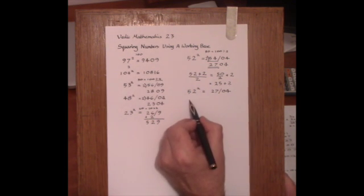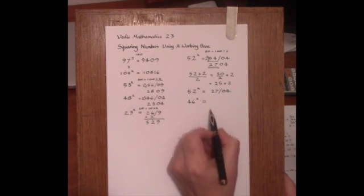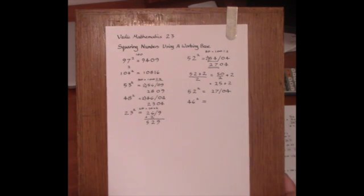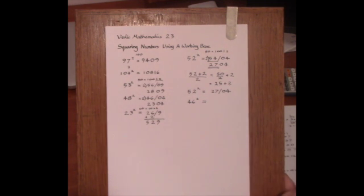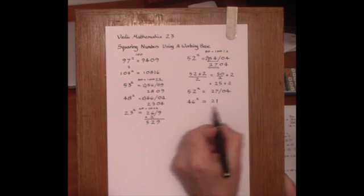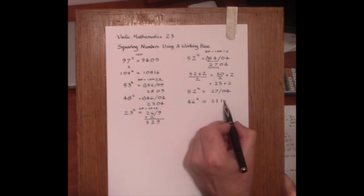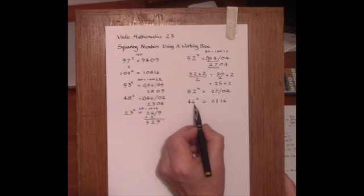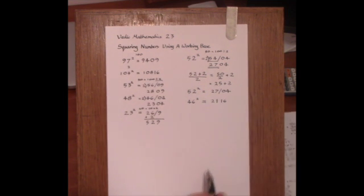And the same will work with a number like 46 squared. We can take 50 as the working base, half of that is 25, then take away the deficiency making 21, and then set up the square of the deficiency 16, because the deficiency is 4 and 4 squared is 16. And I thought that was quite a neat method.